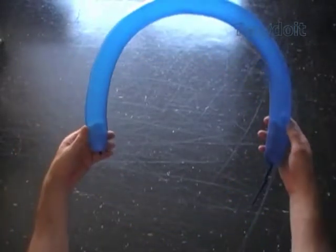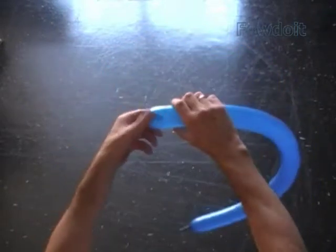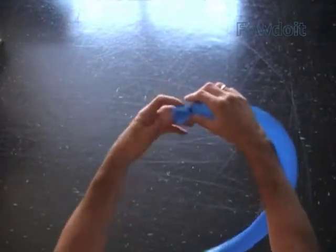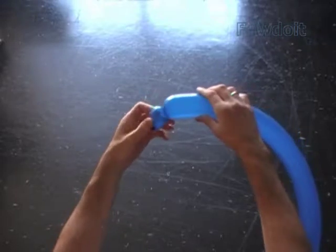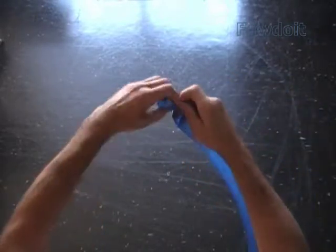As usual, we start twisting bubbles from the nozzle end of the balloon. Twist the first soft about one inch bubble. Lock both ends of the first bubble in one lock twist.